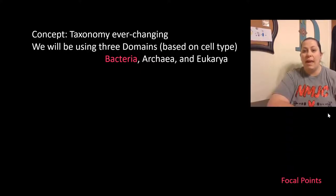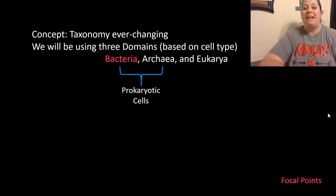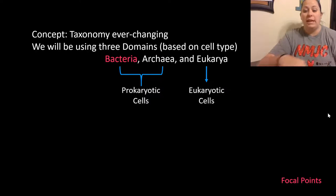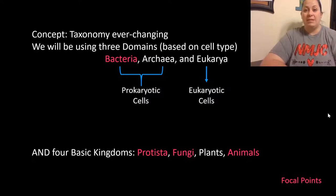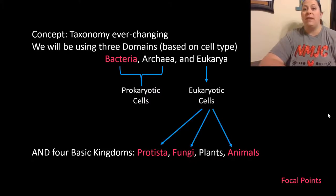The three domains are bacteria, archaea, and eukarya. Bacteria and archaea have prokaryotic cells — meaning these cells do not contain a nucleus and do not contain membrane-bound organelles. Eukarya has eukaryotic cells, which do have an actual nucleus and organelles. There are four basic kingdoms under these domains: protista, fungi, plants, and animals. Some of the microbes we talk about may be in the protista or fungi kingdoms, and some in animalia. There are no plants we'll discuss in this microbiology course.